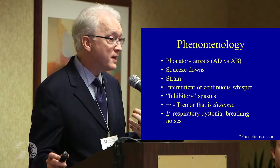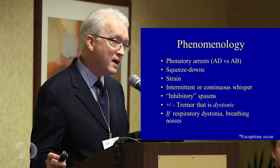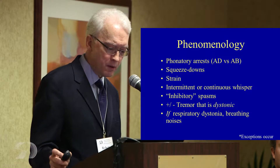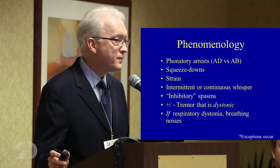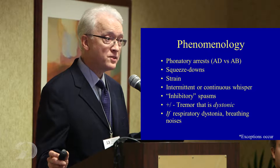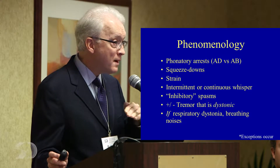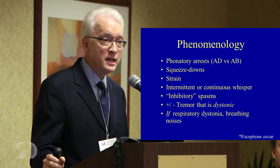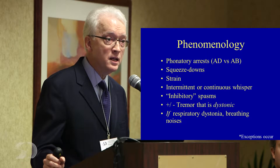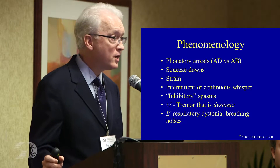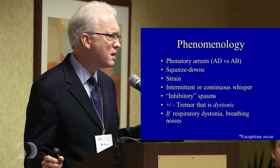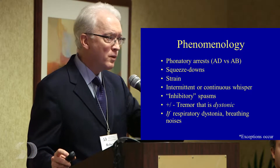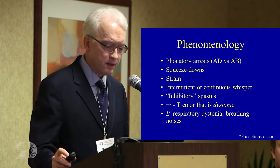Some people have what I call inhibitory spasms, where there's a breaking to a sort of laughing kind of sound — almost like they suddenly lost the tone in their thyroarytenoid muscles, their vocal fold muscles. And then there's tremor — dystonic tremor, not essential tremor — marked by interruptions and variability of amplitude and frequency. That's a dystonic tremor, interrupted like a car motor faltering, as opposed to essential tremor, which is far more regular in amplitude and frequency without the interruptions.